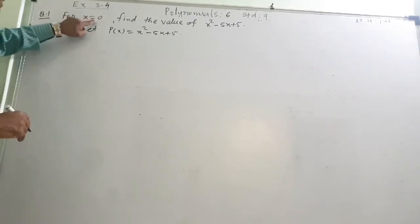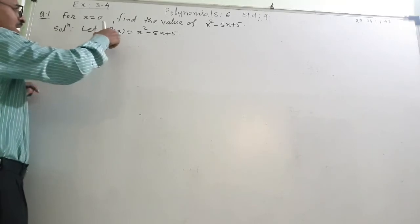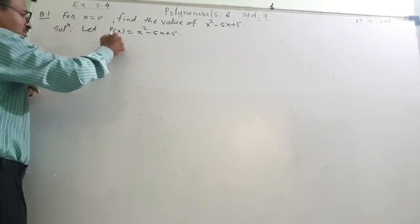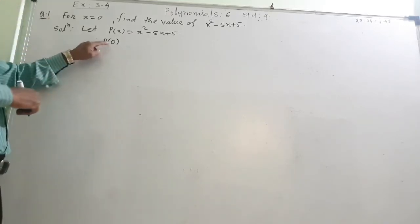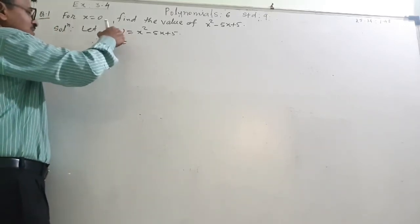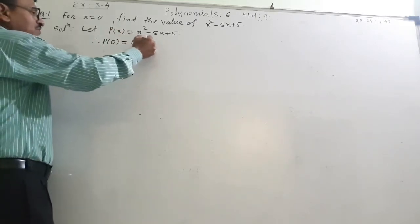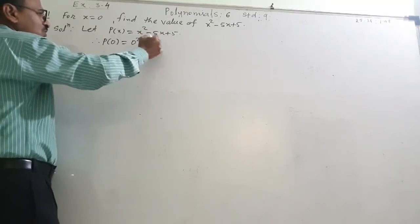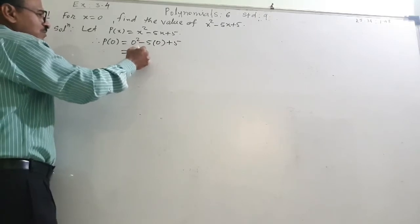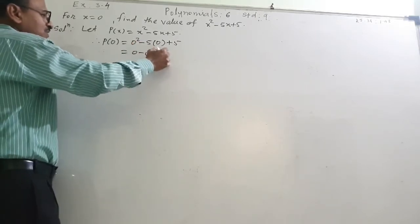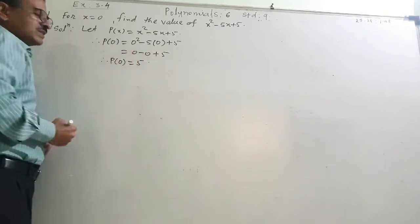If I put x equal to 0, means I will write it like this. Therefore, p of 0 — means value of the polynomial at x equal to 0 — p of 0 is equal to: what is x? 0. So 0 square minus 5 into 0 plus 5. So 0 square is 0, minus 0, plus 5. Therefore, p of 0 is equal to 5. This is the answer.